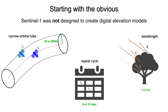Generating digital elevation models with Sentinel-1 data is a challenging task, because the mission was not primarily designed for this. The narrow orbital tube provides excellent conditions for differential interferometry, but not all image pairs can be turned into DEMs. Furthermore, the repeat cycle of 6 or even 12 days can result in temporal decorrelation over many surfaces, especially in combination with the wavelength of Sentinel-1's C-band.